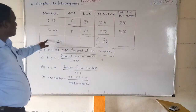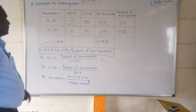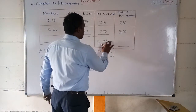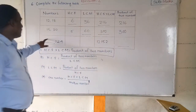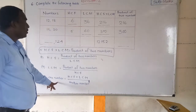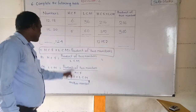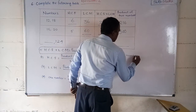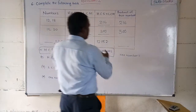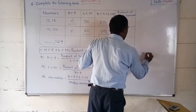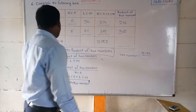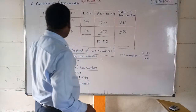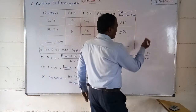Now let us move to the third problem. Here, one number is not given and HCF is not given. The product of HCF and LCM is given. So to find the missing number, we use the formula: one number is equal to HCF into LCM divided by the other number. So, one number equals 2152 divided by 124.